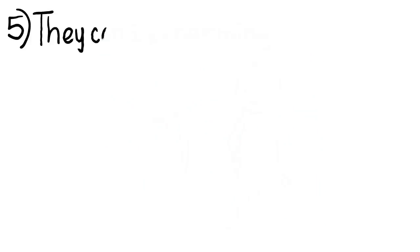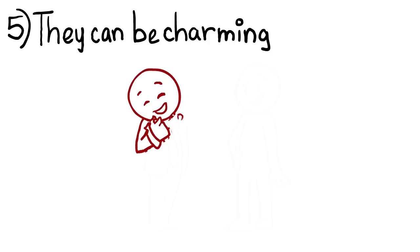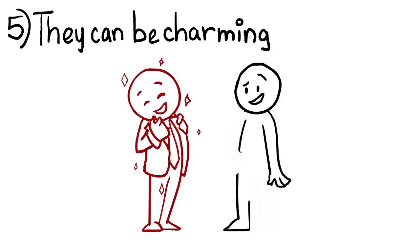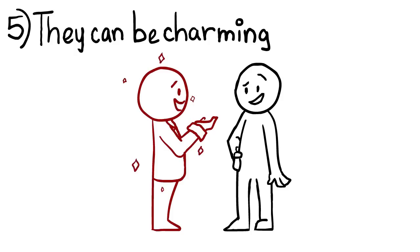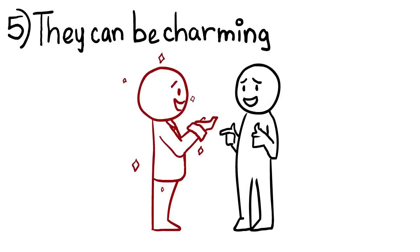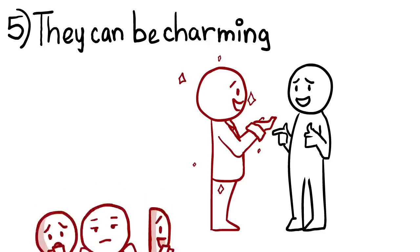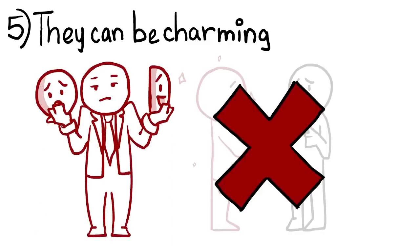5. Psychopaths can be charming. When a psychopath approaches a victim, he or she will often seem incredibly charming. But the more sensitive and wary individuals will note that there is something wrong or off about this charm. It just doesn't seem right. That's because it's all an act, and the psychopath doesn't actually care about you.